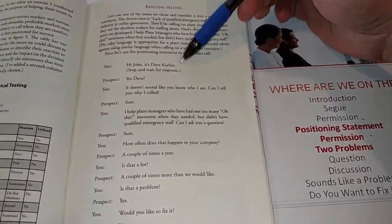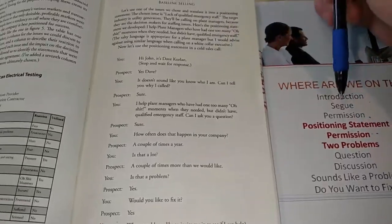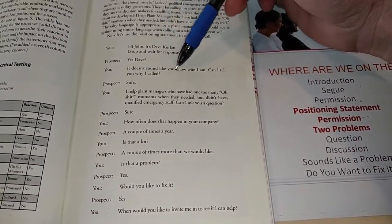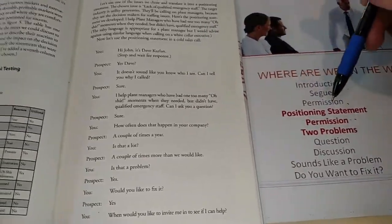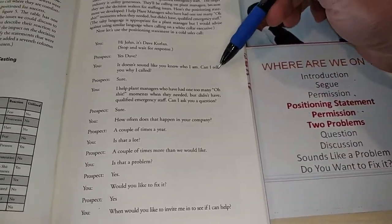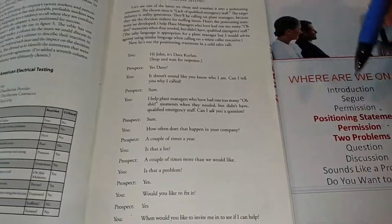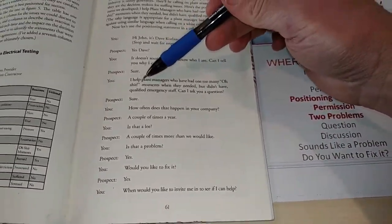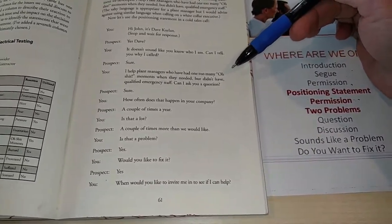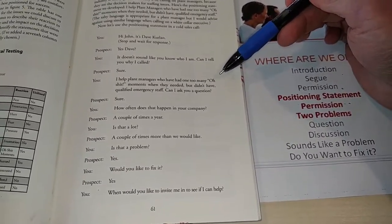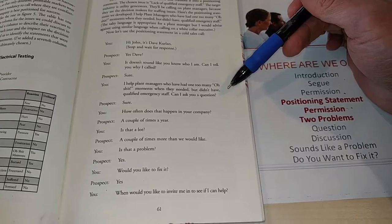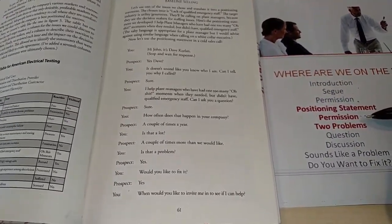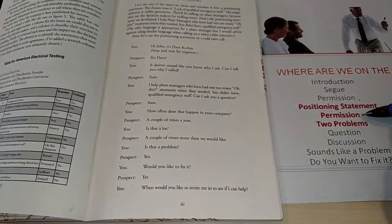But introduction is this line. Hi, John, it's Dave Curlin in this script. That's the introduction. Segway would be, it doesn't sound like you know who I am. And I'm going to run through this for you. Permission would be, can I tell you why I called? And then positioning statement is, I help in this example. I help plant managers who have had one too many, oh shit, moments when they needed but didn't have qualified emergency staff. Can I ask you a question? Is the next permission. So that's as far as we get.